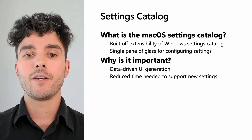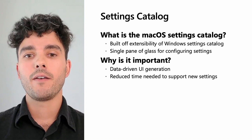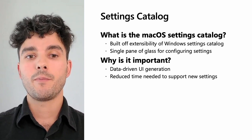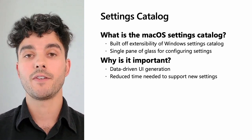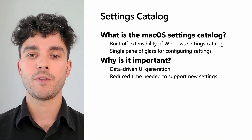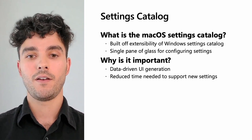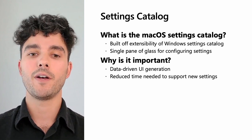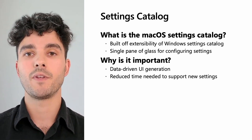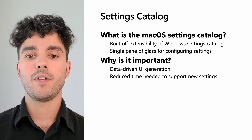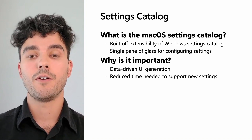Our previous settings infrastructure underlying device configuration templates required separate work streams — one for adding settings to Graph API and one for the user interface implementation. Since the UI was dependent on the graph work being completed first, this would result in a minimum of two months for a release, even to add a single setting. This past year, we partnered with the Windows Settings Catalog team to build a data-driven infrastructure for generating the Settings Catalog user interface. Not only does this provide a single pane of glass for configuring settings on macOS devices, but because it's data-driven, the time and effort needed to support new settings has been significantly reduced — now only a few days to ingest and test new settings before finalizing their release.